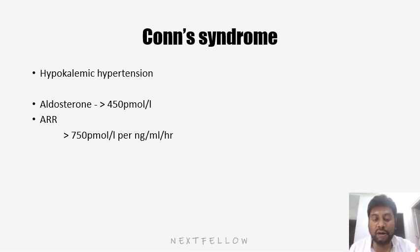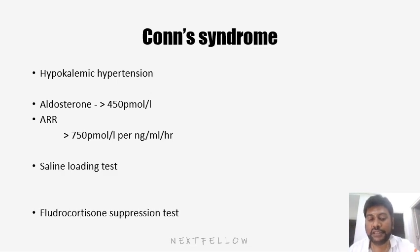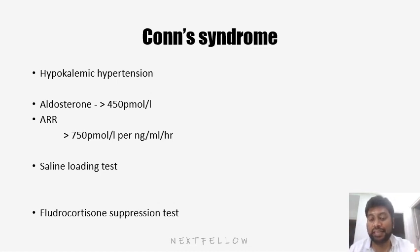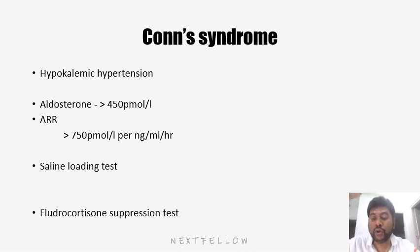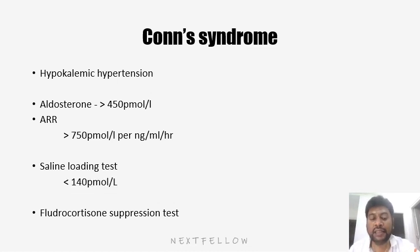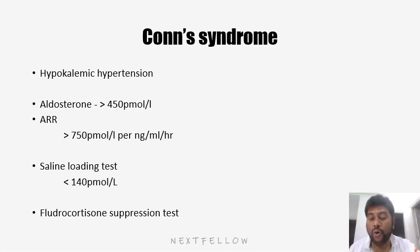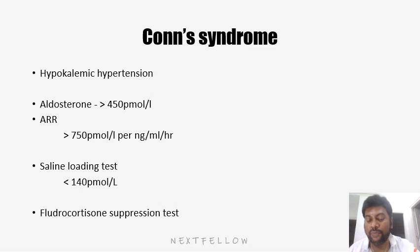With aldosterone level and ratio, you can only suspect. To confirm, you have to go for either saline loading test or fludrocortisone suppression test. In the saline loading test, the patient is given excess normal saline. This extra saline leads to hypernatremia, which suppresses the renin-angiotensin system and ultimately aldosterone levels should also decrease. In a normal person, after saline loading, the aldosterone level should go below 140 picomoles per liter. But if it fails to go below 140 picomoles per liter, then we can confirm the diagnosis as primary hyperaldosteronism.